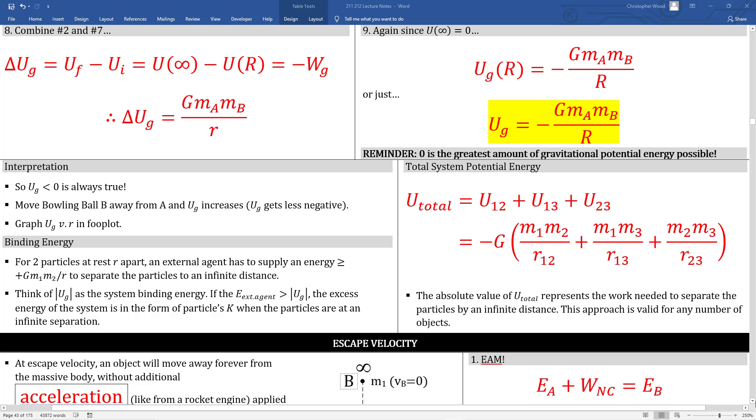Total system potential energy is another superposition type of approach. If I have three objects, I have three potential energy terms. If I have four objects, I would have four gravitational potential energy terms, and so on.